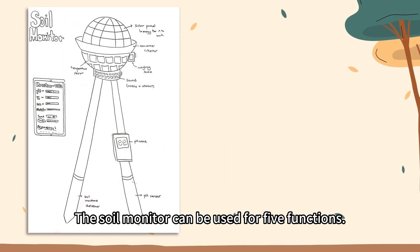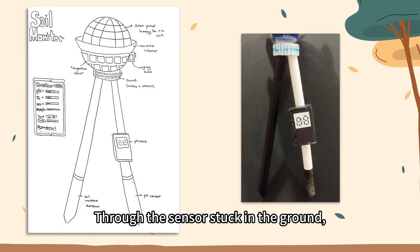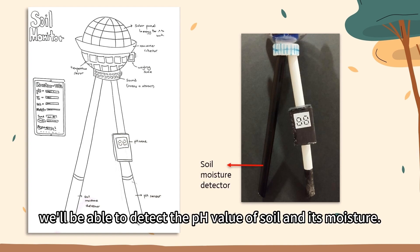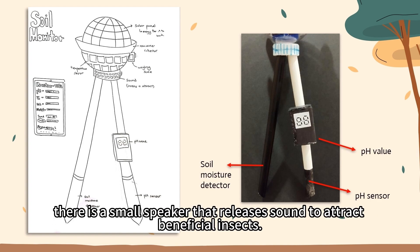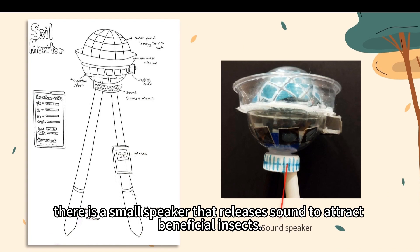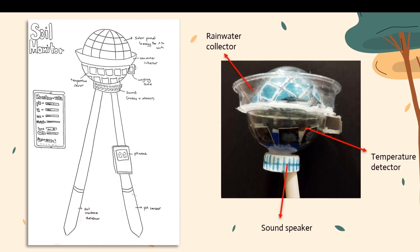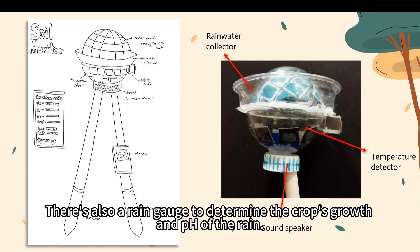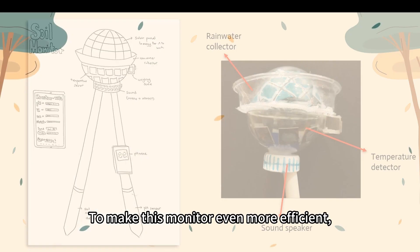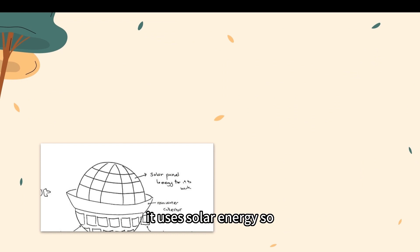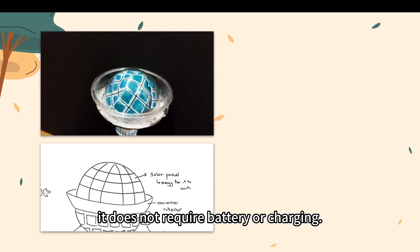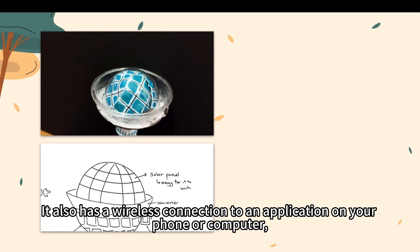The Soy Monitor can be used for five functions. Through the sensor stuck in the ground, we will be able to detect the pH value of soil and its moisture. In the middle part, there is a small speaker that releases sound to attract beneficial insects. The soil temperature measurement works 24x7. There is also a rain gauge to determine the crops' growth and the pH of the rain. To make this monitor even more efficient, it uses solar energy so that it does not require any battery or charging.